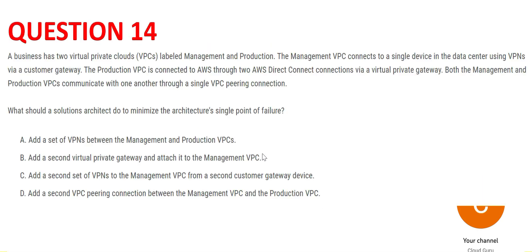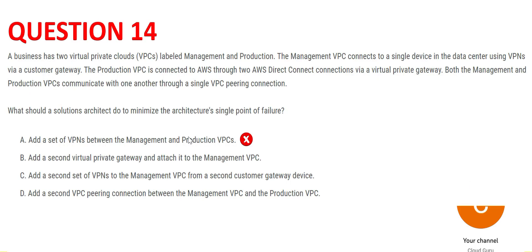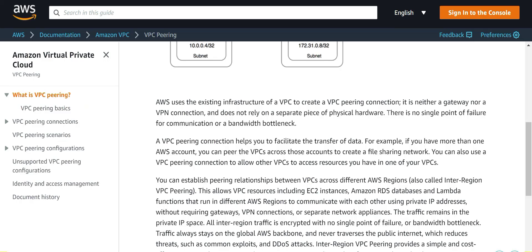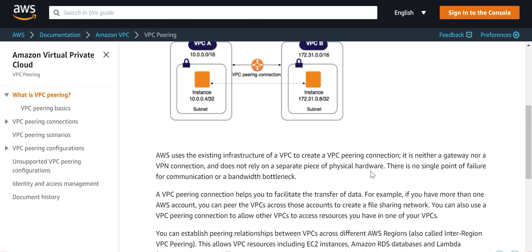Option A says add a set of VPNs between the management and production VPCs. But VPC peering never fails — there is no single point of failure for VPC peering. As the documentation confirms, there is no single point of failure or bandwidth bottleneck for VPC peering connections. So Option A is wrong since it addresses something that isn't actually a risk.